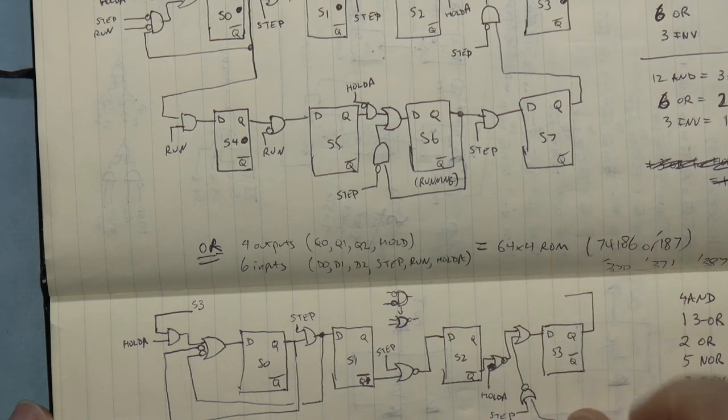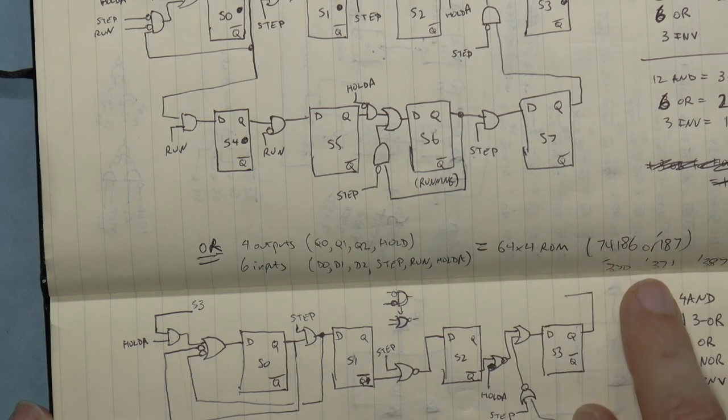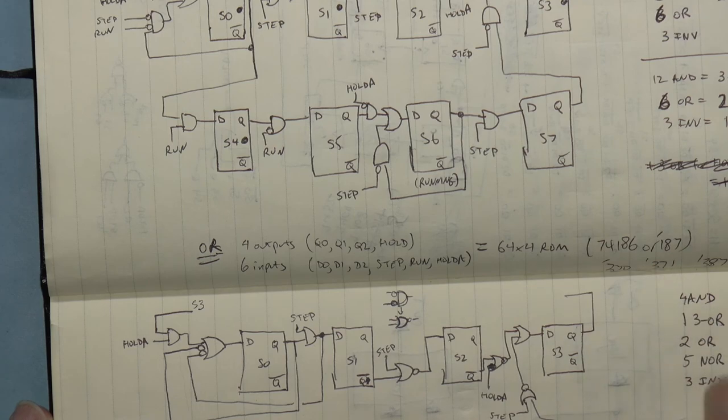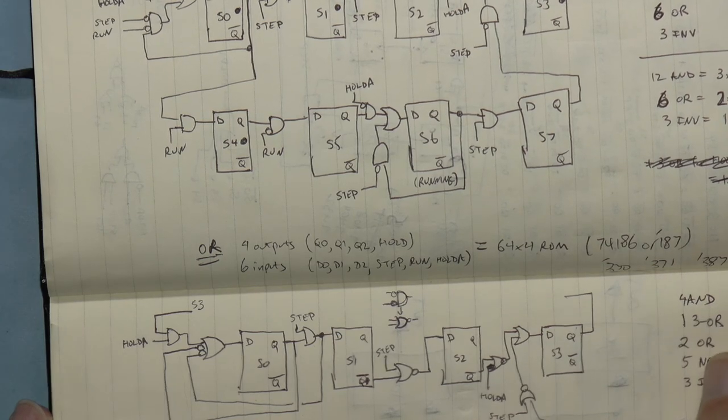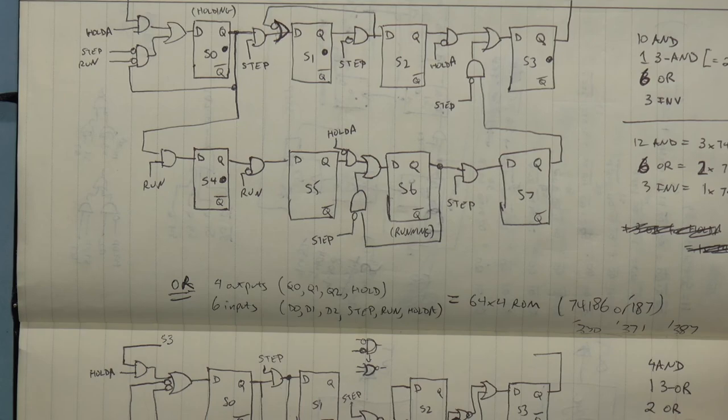Now, back in the day, you could get a small programmable ROM chip, but they don't make those anymore. The smallest parallel input-output ROM I've found is 8K by 8, which is way overkill for this.